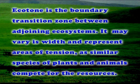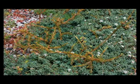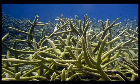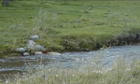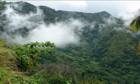Interaction of biotic and abiotic factors are the basic processes involved in any ecosystem. A biome is the largest and most distinct subdivision of the biosphere, including the global scale community of plants and animals. An ecotone is the boundary transition zone between adjoining ecosystems. It may vary in width and represent areas of tension as similar species of plants and animals compete for resources. Microhabitats are delineated by climate and subdivided on the basis of their vegetation.